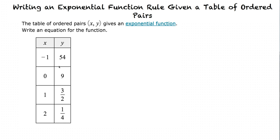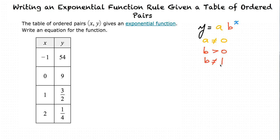Let's remember that the general model for an exponential function is y equals a times b to the x-th power, where a is not equal to 0, b is greater than 0, and b is not equal to 1.